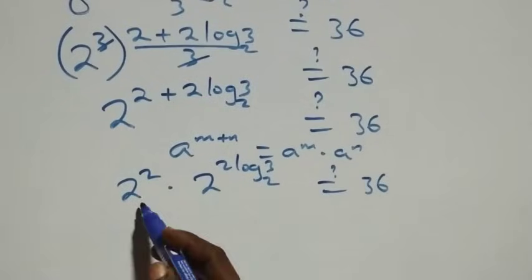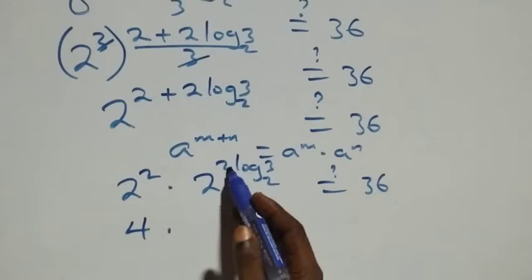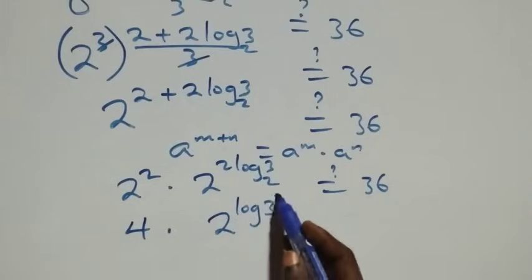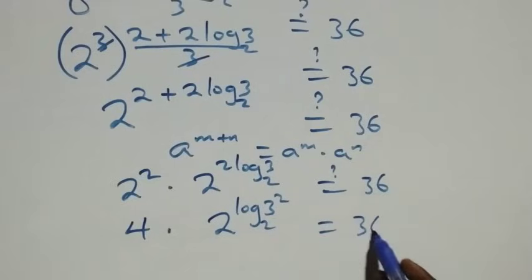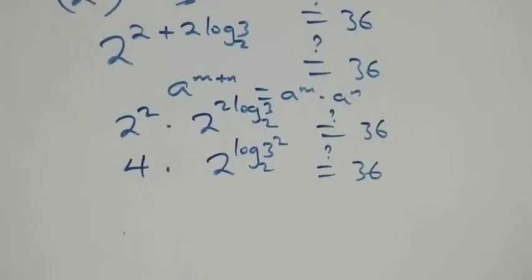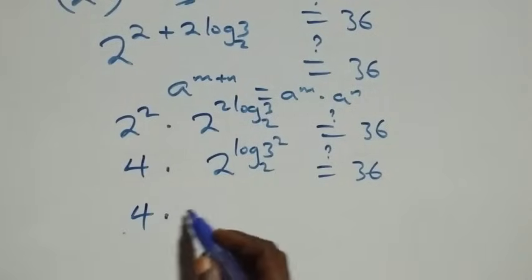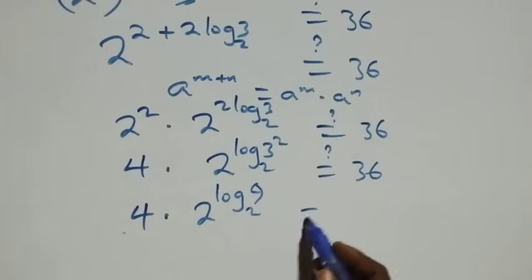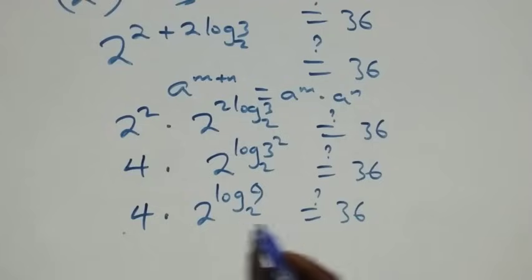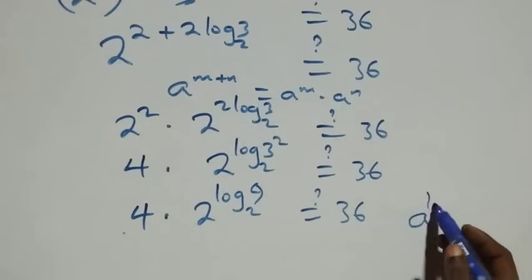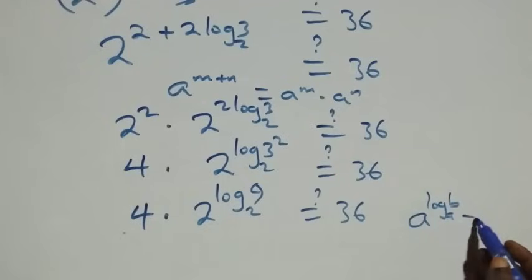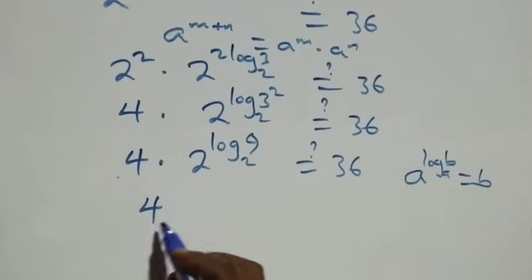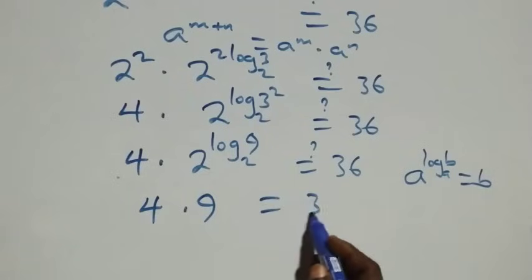Now 2 squared is 4. For the other term, we reverse the log power rule: 2 raised to power 2 log 3 base 2 becomes 2 raised to power log 3 squared base 2, which equals 9. This follows from the identity a raised to power log base a of b equals b. So we have 4 times 9 equals 36.